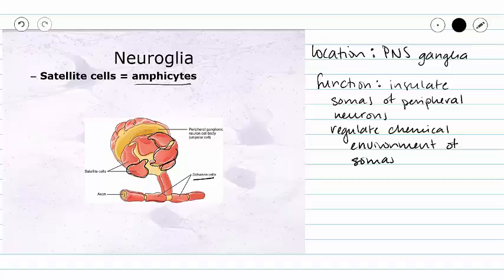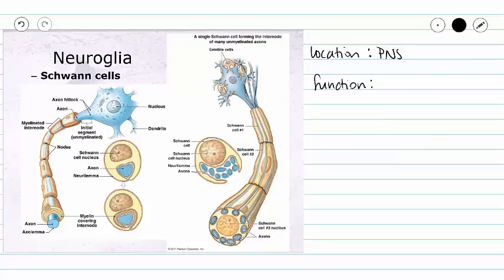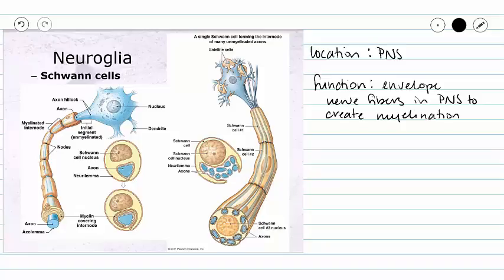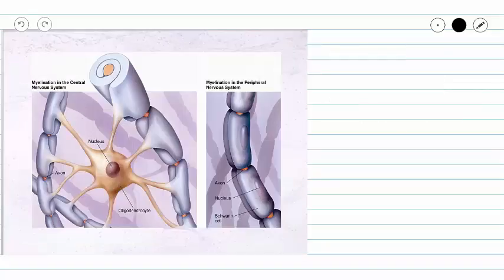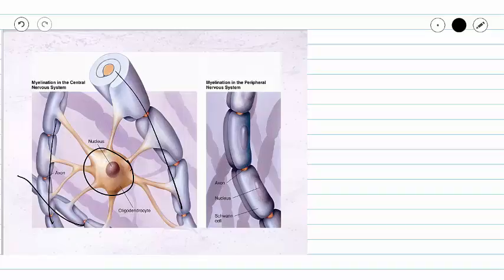Our second type of glial cell in the peripheral nervous system is a Schwann cell. Schwann cells are going to form myelination in peripheral nervous system nerve fibers. Just as we saw with our oligodendrocytes, our Schwann cells are going to wrap around our nerve fiber and have many different layers of lipid going around that nerve fiber to provide the insulation. The difference between Schwann cells and oligodendrocytes besides location is that one oligodendrocyte can myelinate several axons, whereas in the peripheral nervous system, one Schwann cell myelinates one portion of one axon.